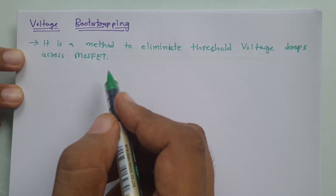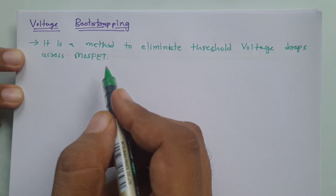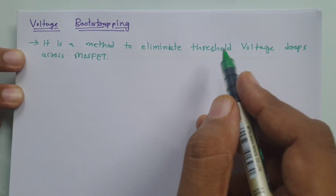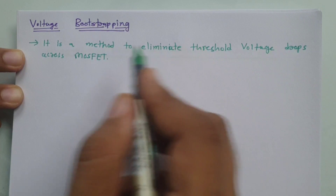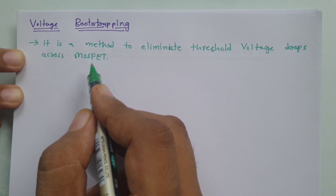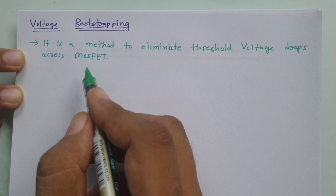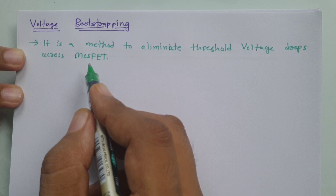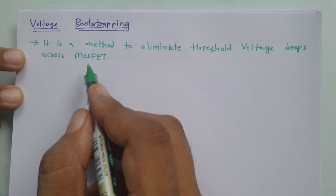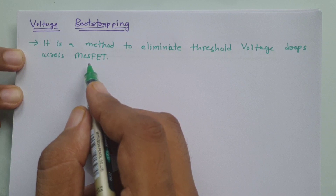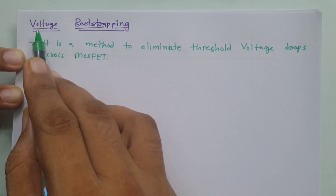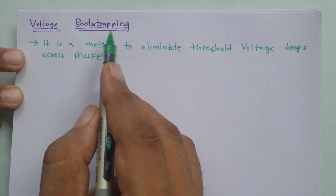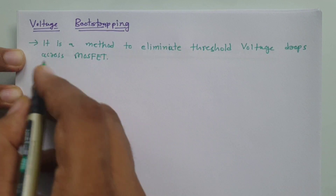Sometimes you'll find your output voltage swing is not happening from 0 to VDD for logic 0 to logic 1, because of the threshold voltage drop which happens in CMOS structure. If you avoid that threshold voltage drop across the CMOS structure, you can increase your output voltage swing to 0 to VDD, and with the highest voltage swing from 0 to VDD you have the highest noise margin. That's why we provide voltage bootstrapping.